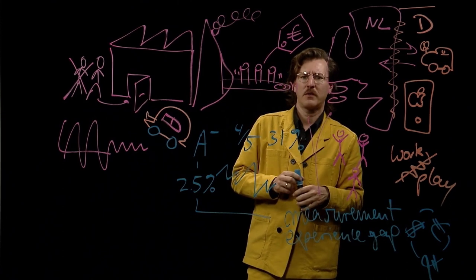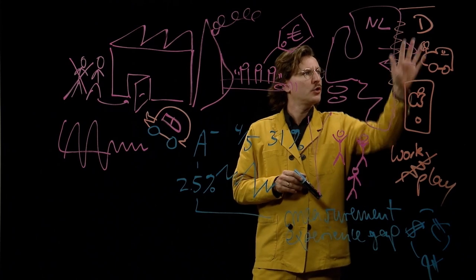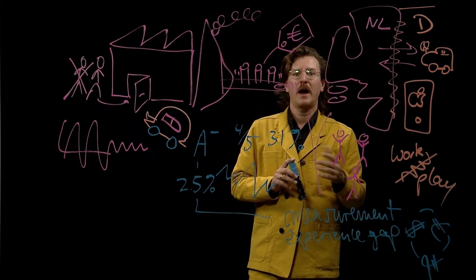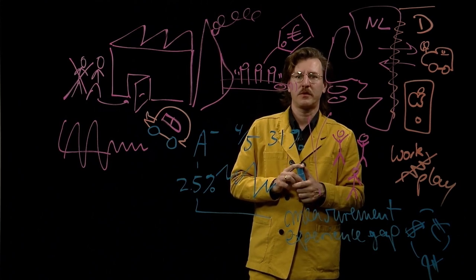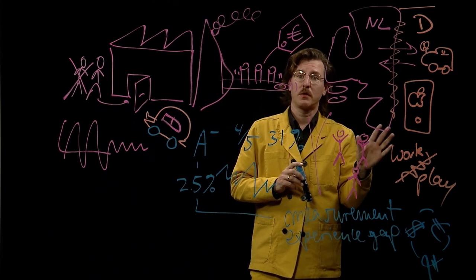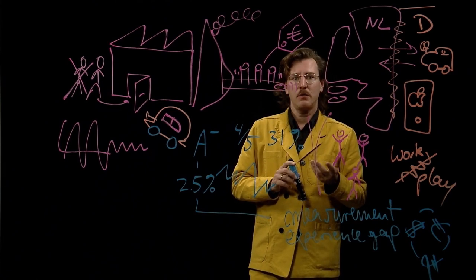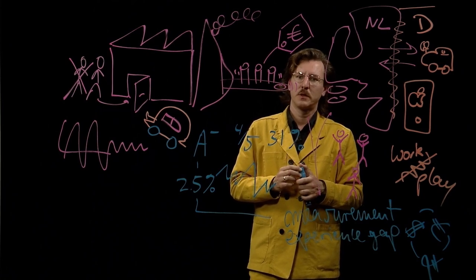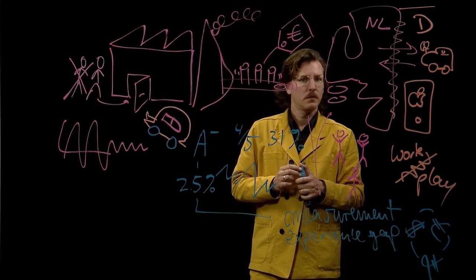Consider the following example. Germany and the Netherlands are two rich, neighboring EU countries with highly reputable statistical offices. Both track what one country trades with the other. In theory, the figures they collect about their mutual trade should match. In practice, they don't at all.